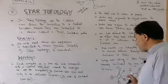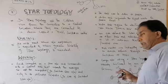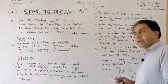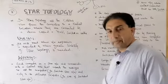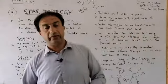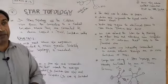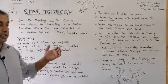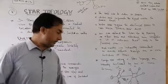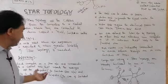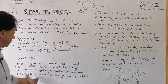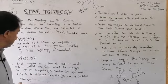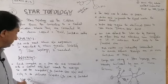In the case of a hub-based star network, the system sends data to the central hub, which broadcasts or floods the data to the whole network. In the case of a switch-based star network, the data is sent only to the destination computer.